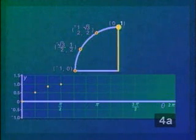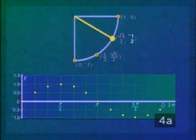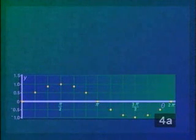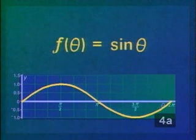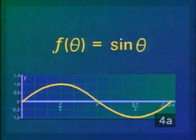We can continue plotting the points corresponding to quadrants 2, 3, and 4. If we join the points with a smooth curve, we can see the graph of F of theta equals sine theta.